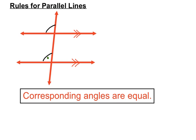There are several more examples of corresponding angles: bottom left and bottom left — they're corresponding and they'll be equal to each other in parallel lines. Top right and top right — they're corresponding, they're in matching positions, and they're equal in parallel lines.